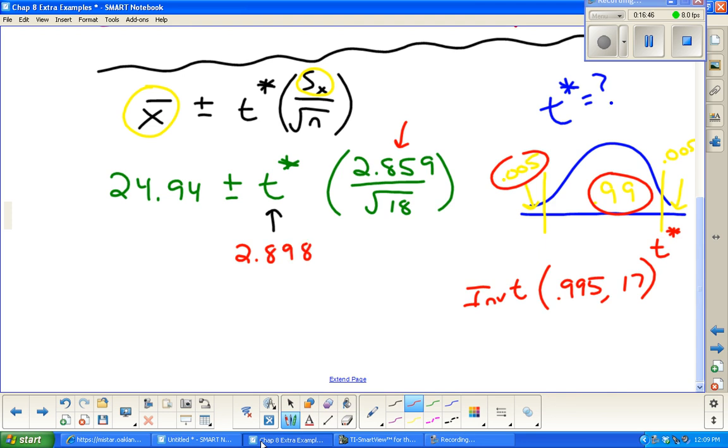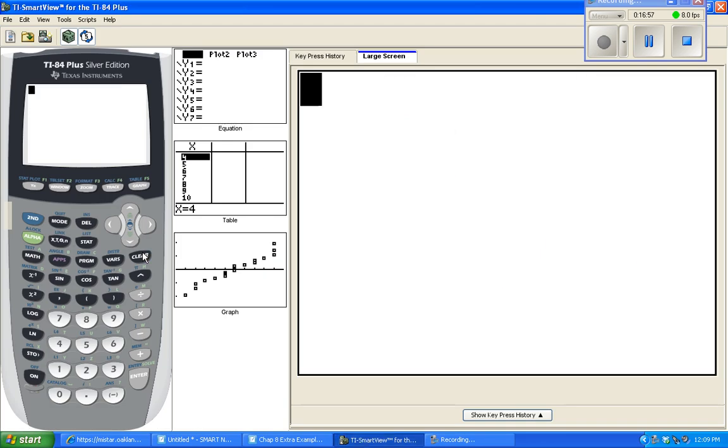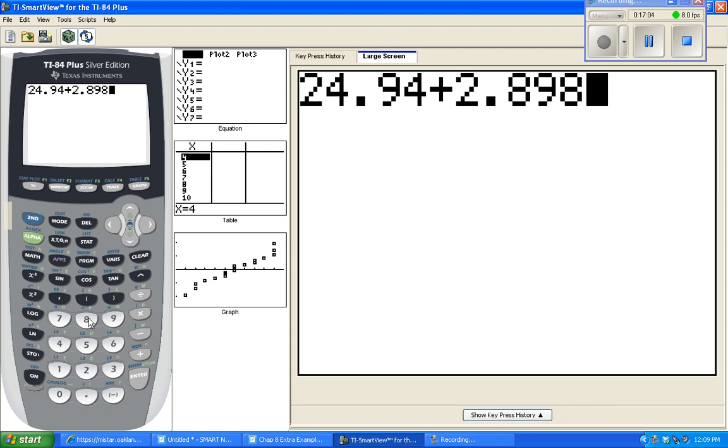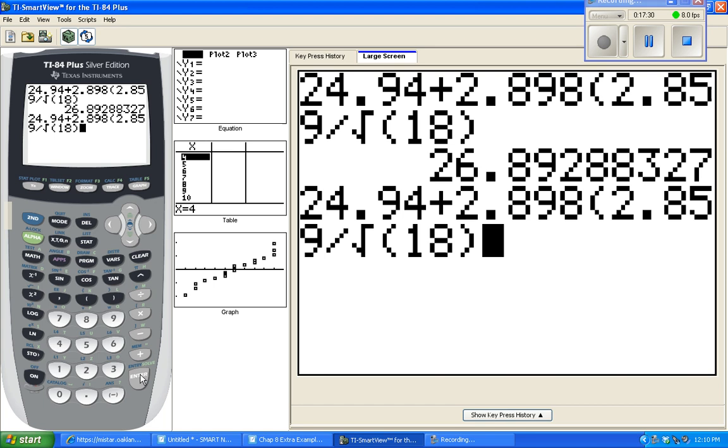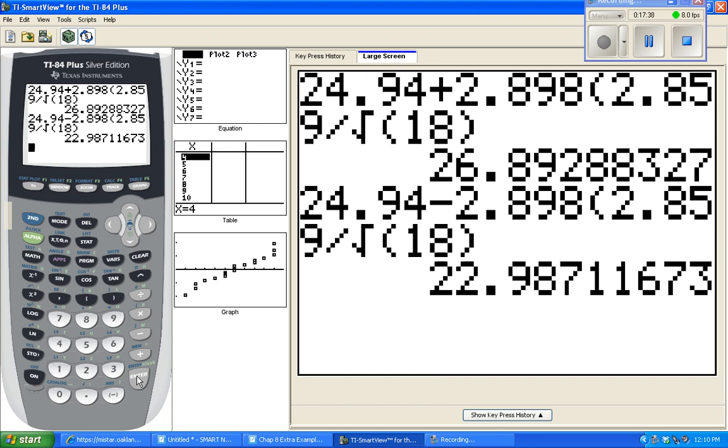We should be able to do our calculations now. Let's just do it the long way, and then we can verify them on the calculator. Let's do our sample mean 24.94. Let's do the plus first. It's 2.898 times the standard deviation, 2.859 over the square root of 18. That should give you the upper end point of the interval. A little trick to get the lower end, it's basically the whole thing except there's a minus. Second enter, repeat what you had. Go and change that plus after the x-bar to a minus. And that's your lower end point.